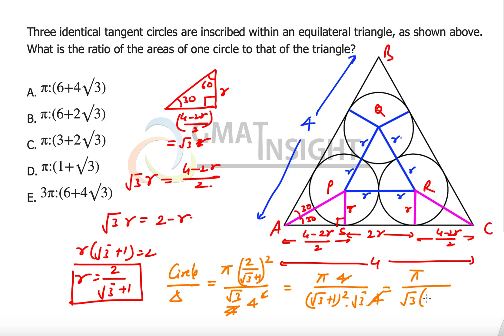The denominator is root 3 times 3 plus 1 plus 2 root 3. We have applied the property of a plus b whole squared: a squared plus b squared plus 2ab. So eventually the final result that we have is pi divided by root 3 times 4 plus 2 root 3.